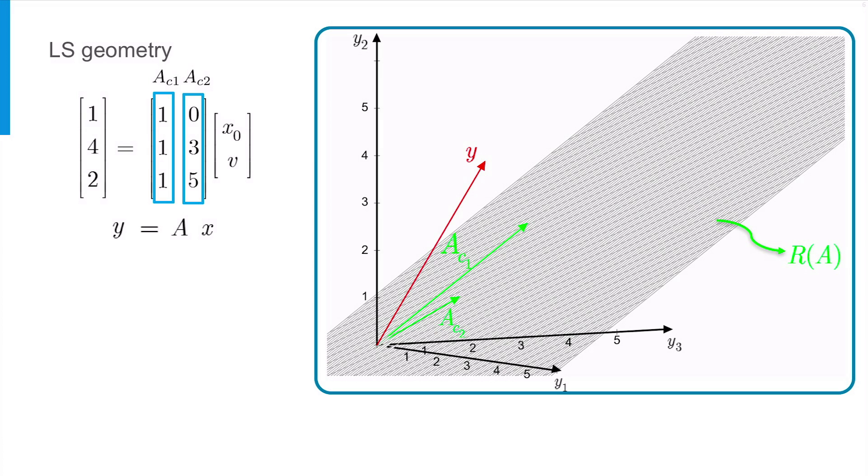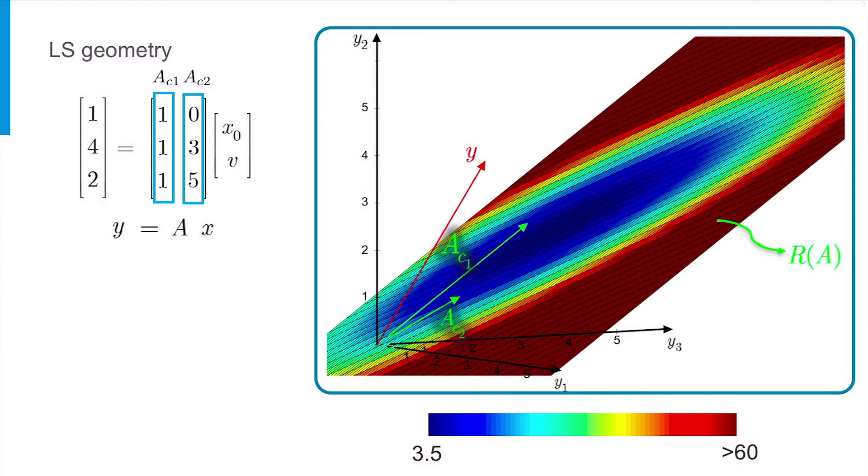I have already computed the distance between the observation vector y and all the points on this plane. Let's see the results. In this plot, the colors show the distance between the observation vector and all the vectors lying in the range space of A, in this case this plane. The color bar shows the range of the color values. So, the minimum distance is corresponding to a point in the middle of the blue area.